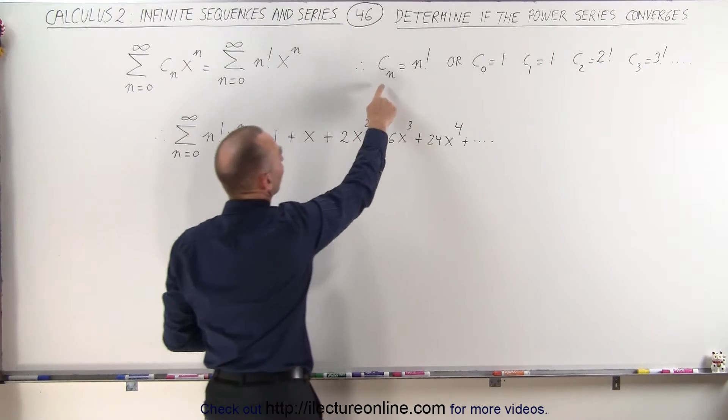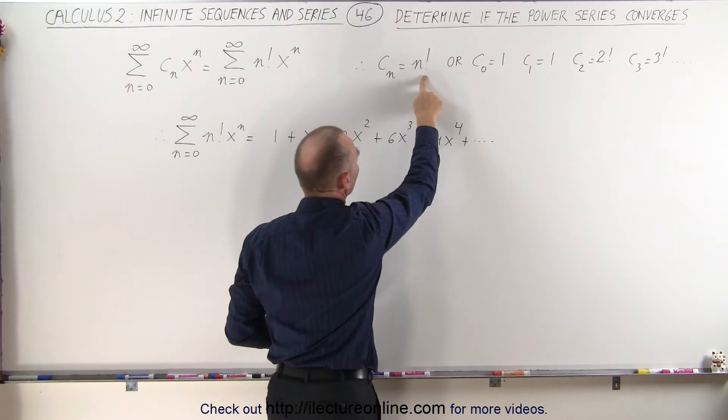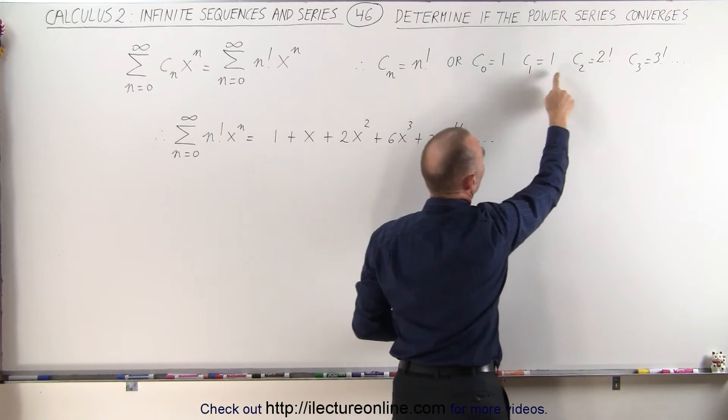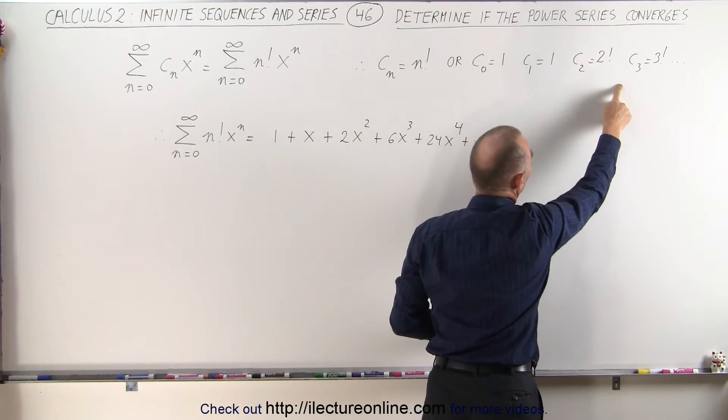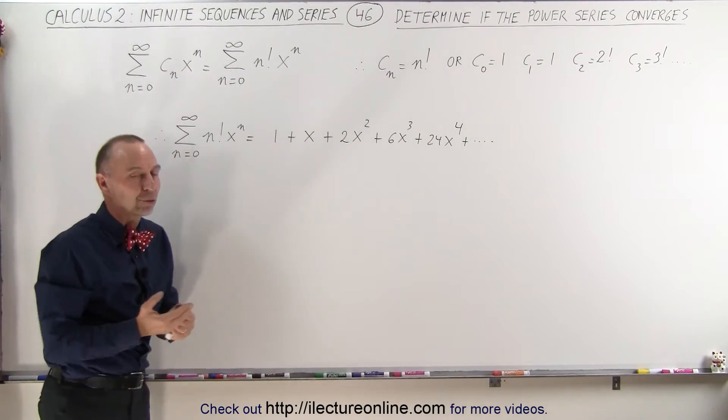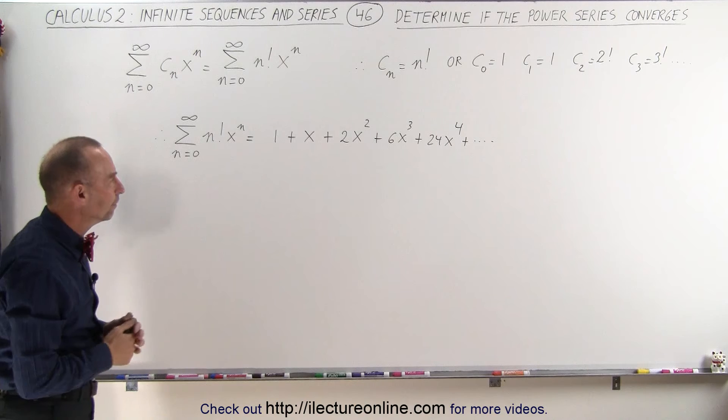So we can say that C sub n is equal to n factorial, which means that C sub 0 is 1, C sub 1 is 1, C sub 2 is 2 factorial, C sub 3 is 3 factorial, and so forth. Remember that 0 factorial and 1 factorial are defined as 1.